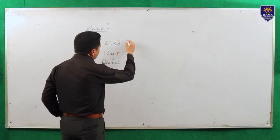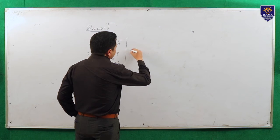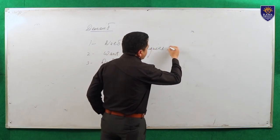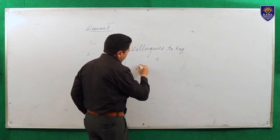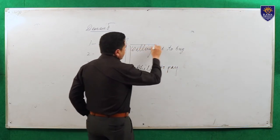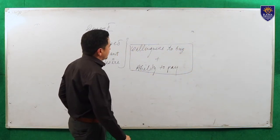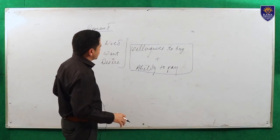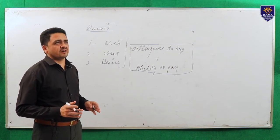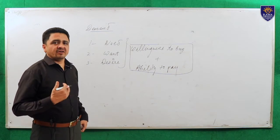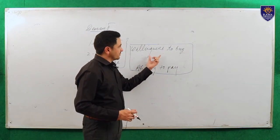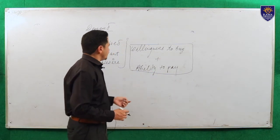Whether it is need, want, or desire, there is one word — willingness. Willingness to buy plus ability to pay. This is the part of demand. I just concise all these things within this formula: willingness to buy plus ability to pay.